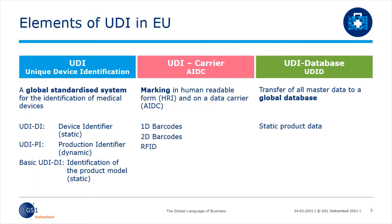Starting on the left-hand side, we have the identification — the UDI. This refers to a global standardized system of identification. It consists of three parts: UDI-DI, which is the device identifier; UDI-PI, which is the production identifier; and the Basic UDI-DI, which is the identifier of the product model.